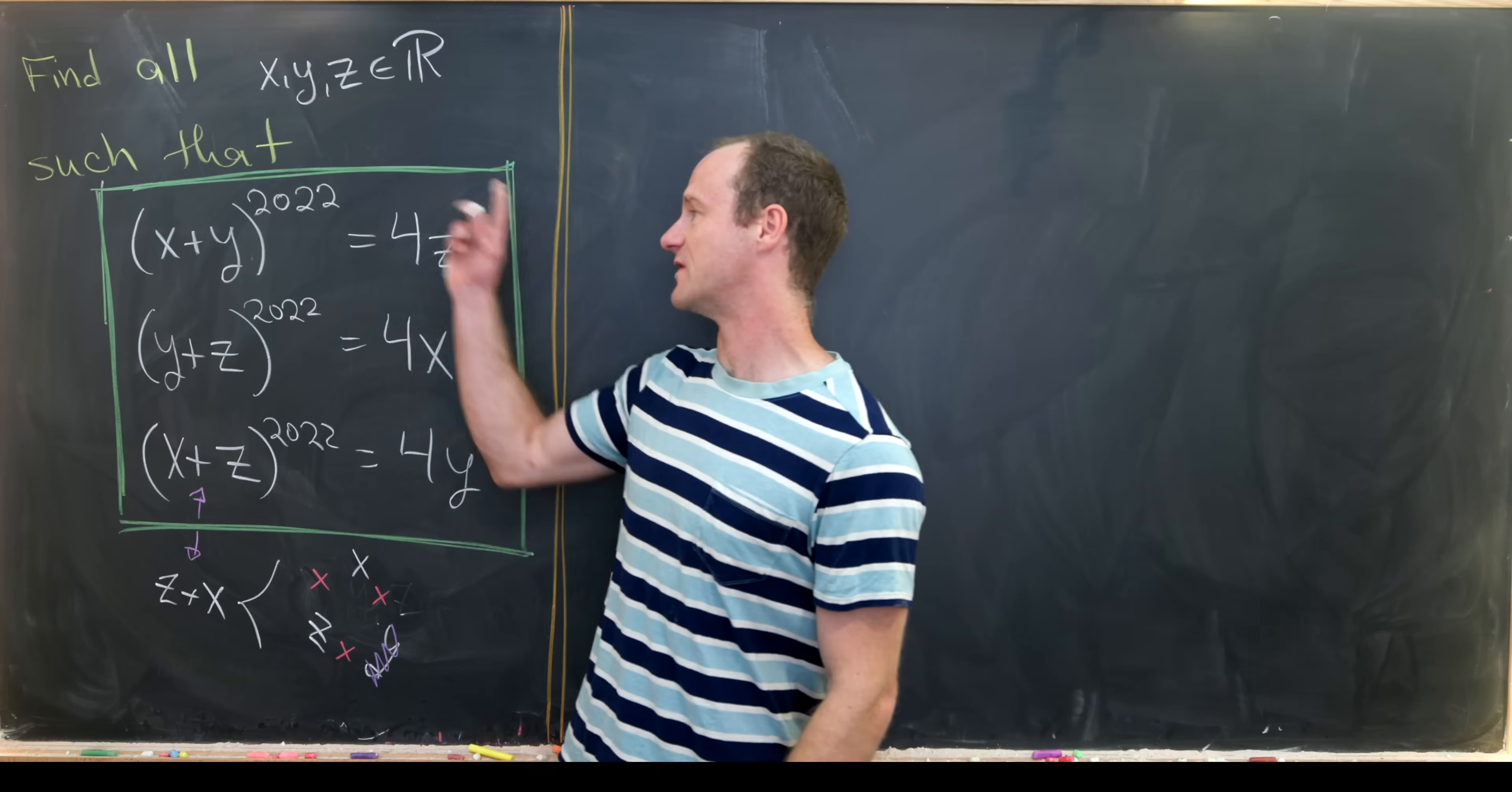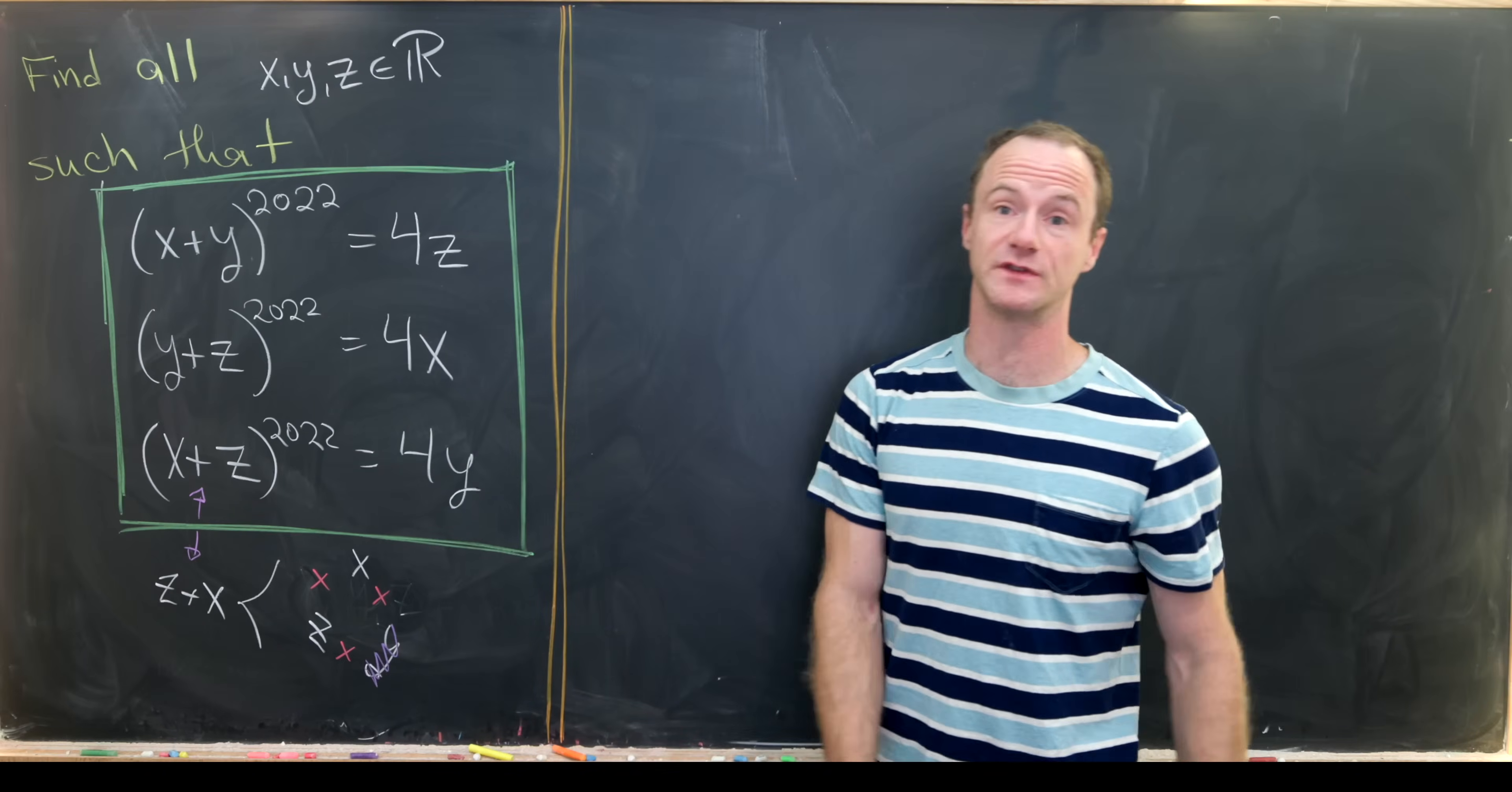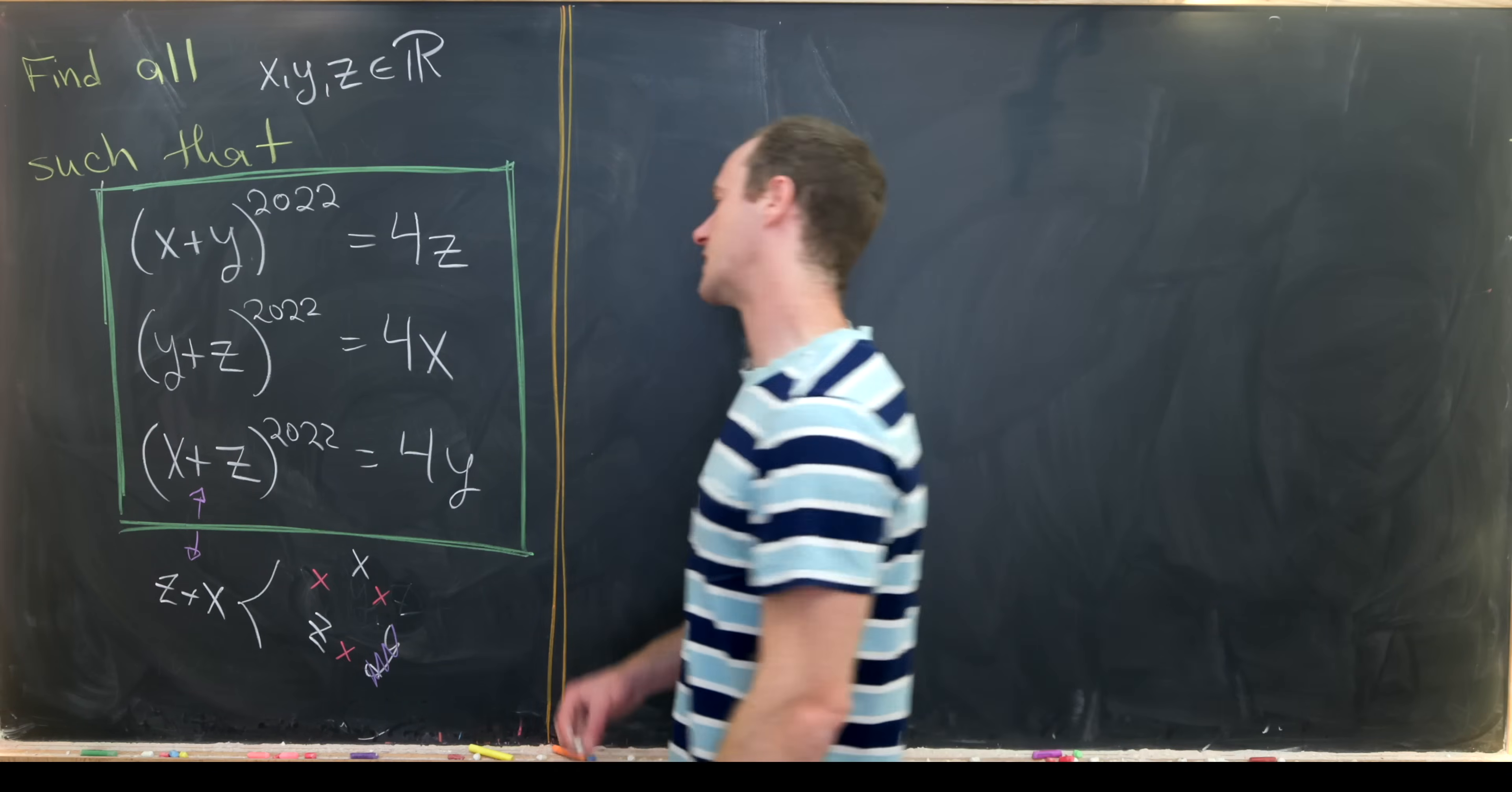First of all, notice that we have even powers over here on the left-hand side, and then we've got constant multiples of our variables over here on the right-hand side. And even powers are always greater than or equal to zero. That means that all of our variables are also greater than or equal to zero.